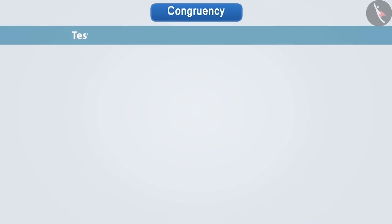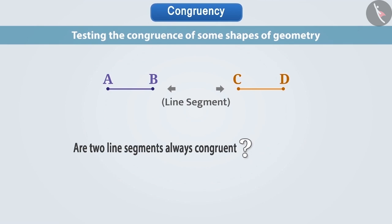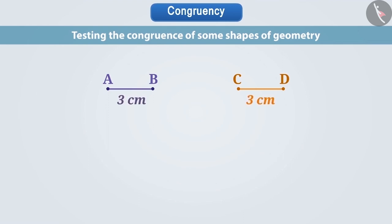Now let's examine the congruency of some shapes of geometry. Are two line segments always congruent? Think about it. Let us tell you. The lengths of line segments are limited. When the two line segments have the same length,